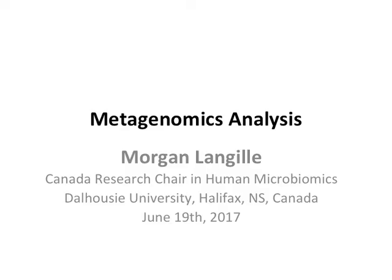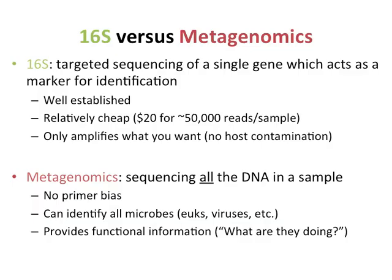What I'm going to cover is shotgun metagenomics and how we annotate it to get both taxonomic profiles and functional profiles. Just to do a one-slide comparison between 16S and metagenomics: people usually consider metagenomics better. It is more expensive, but there are other pros and cons besides just getting more data. We know 16S is targeted sequencing of a single gene, and from that you basically get taxonomic profiles.